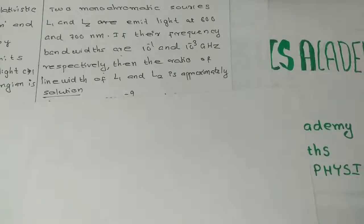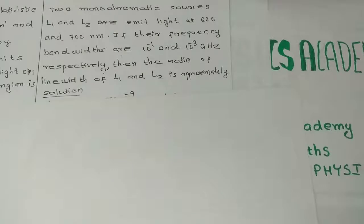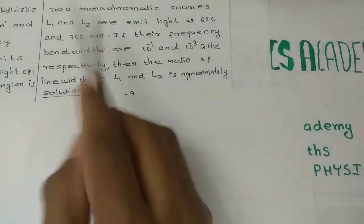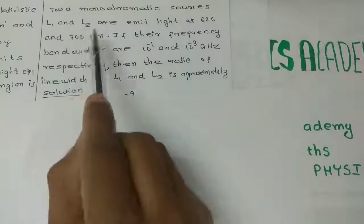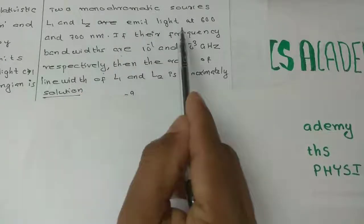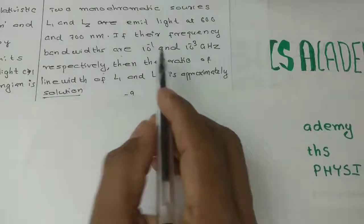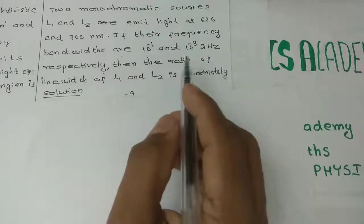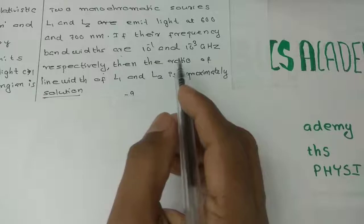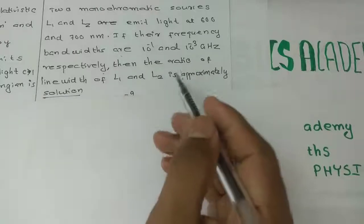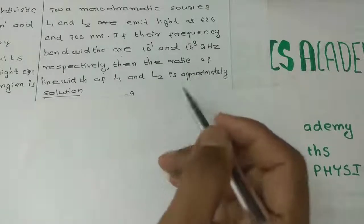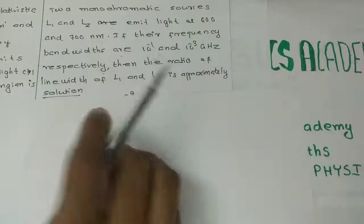Welcome to Cantaloe Physics Academy. Today we will discuss the State Eligibility Test. Two monochromatic sources L1 and L2 emit light at 600 and 700 nanometers. If their frequency bandwidths are 10 to the minus 1 and 10 to the minus 3 gigahertz respectively, then the ratio of line width of L1 and L2 is approximately?